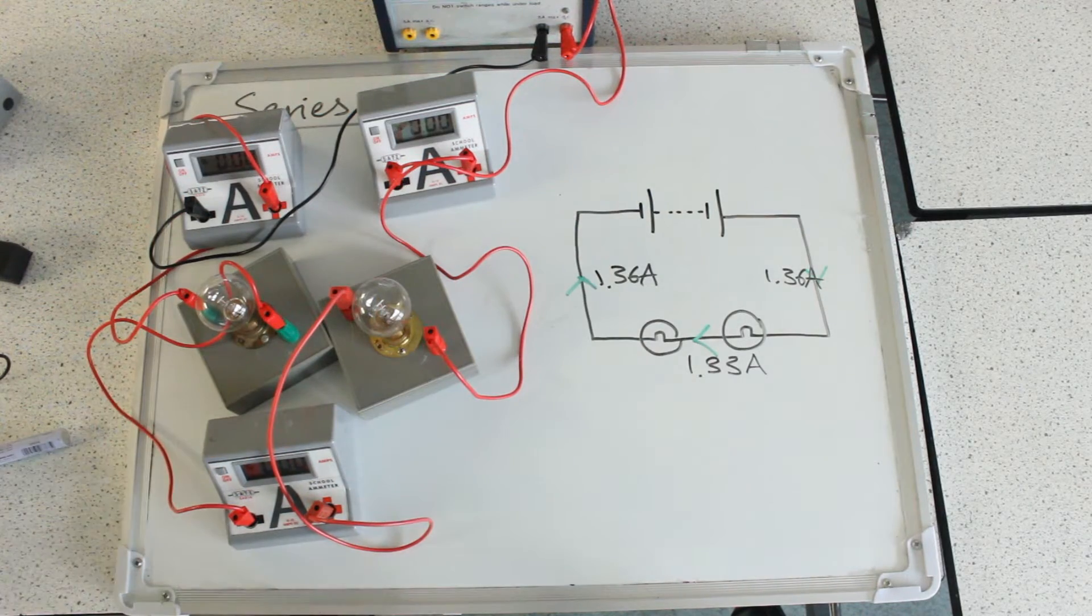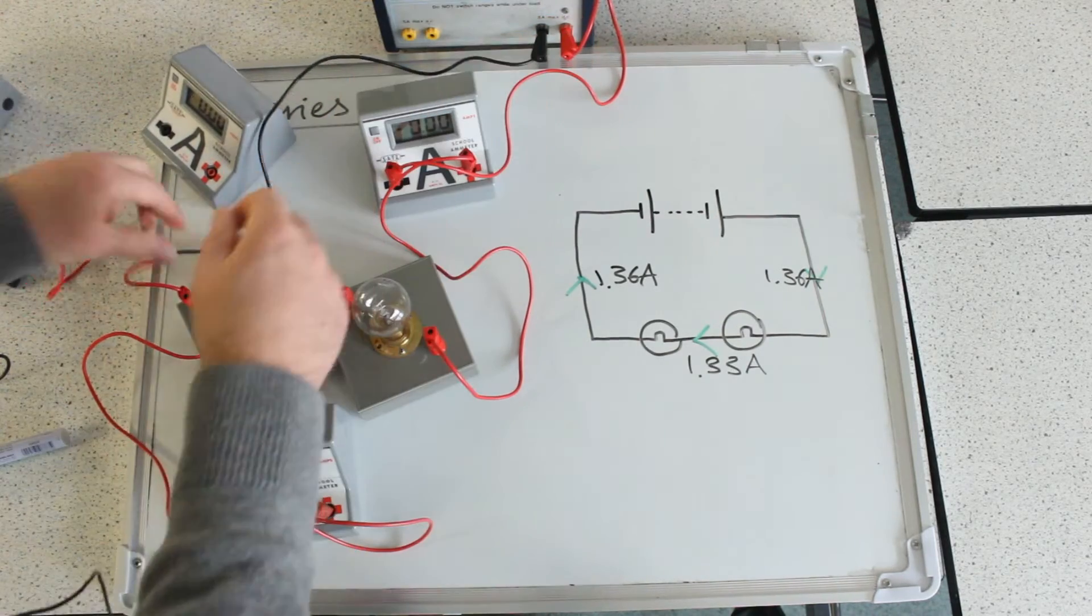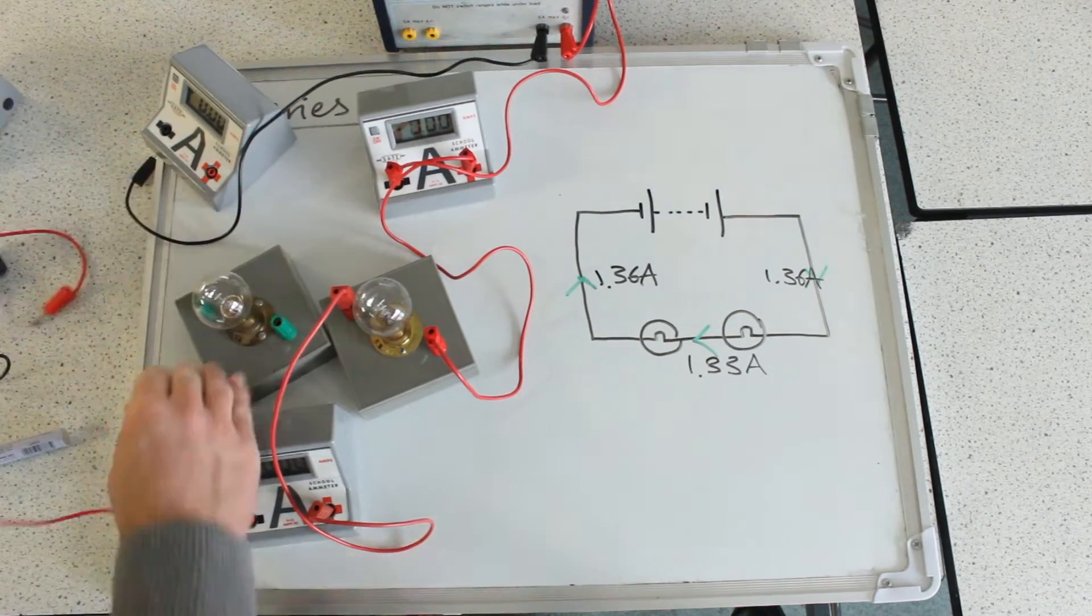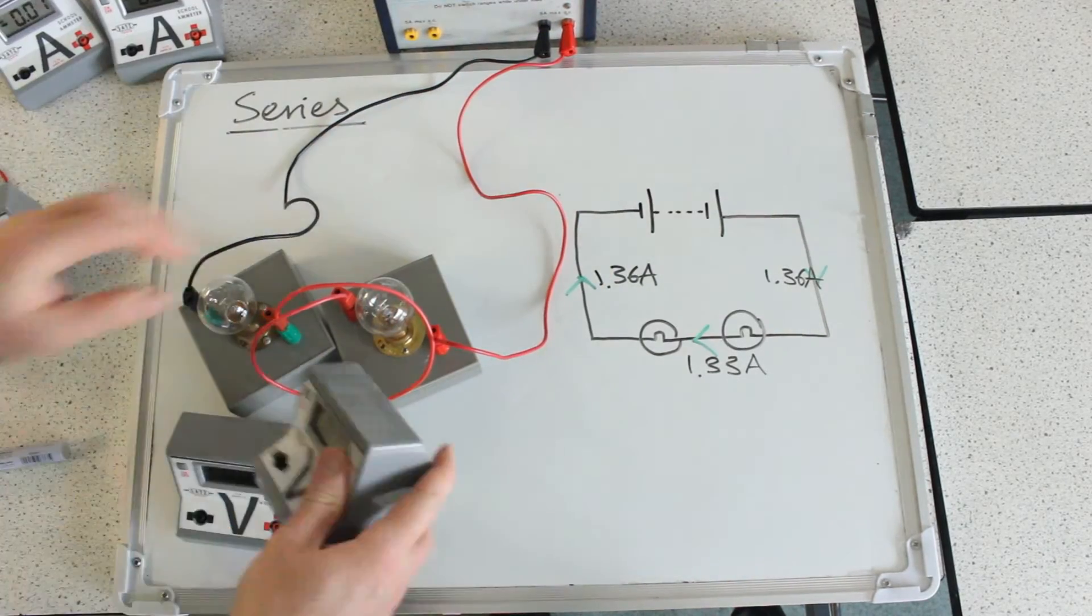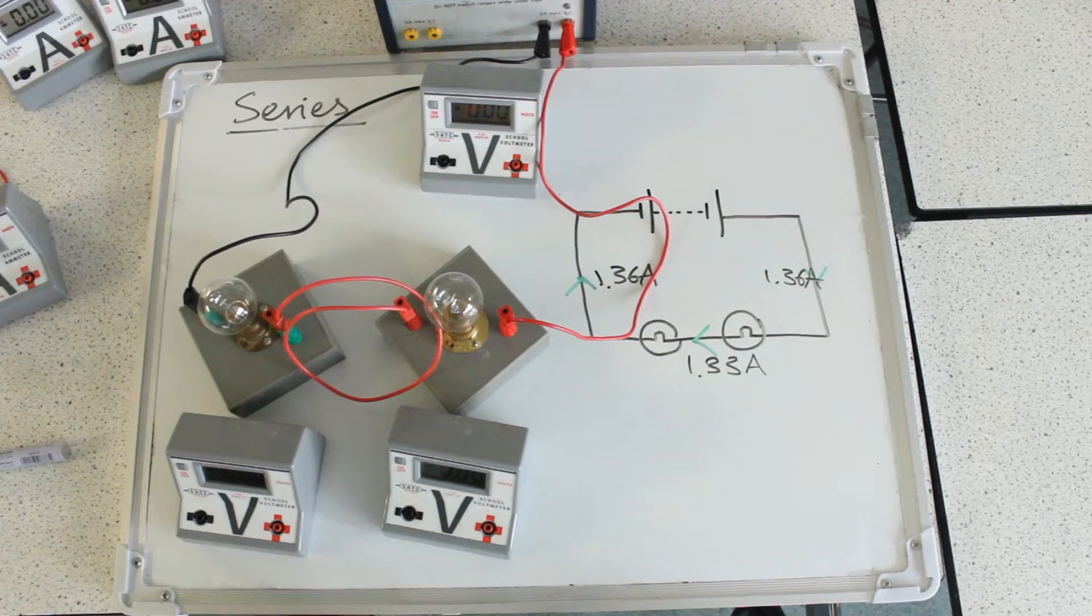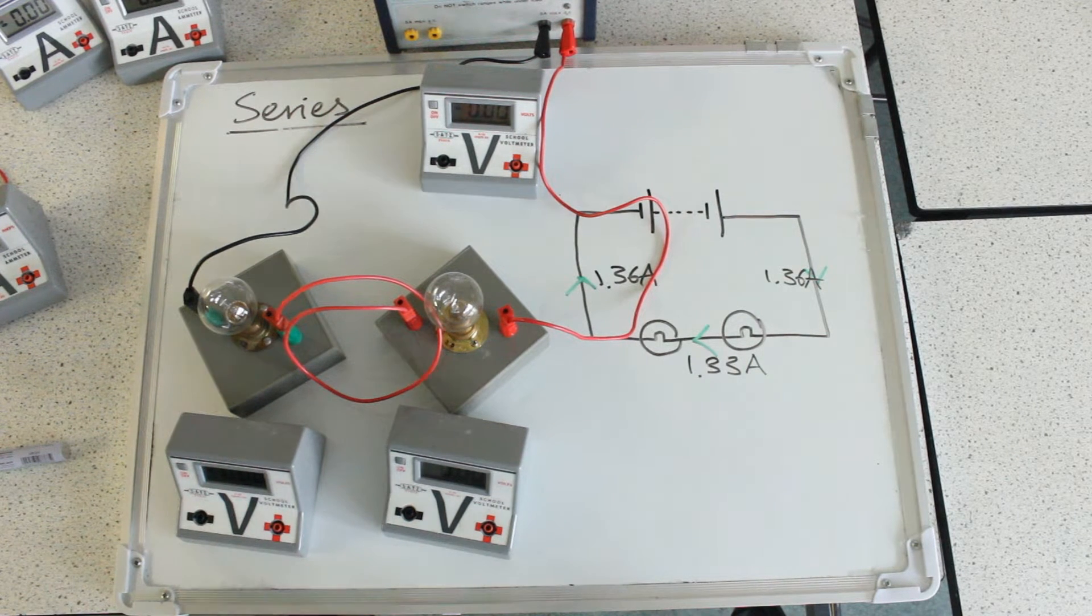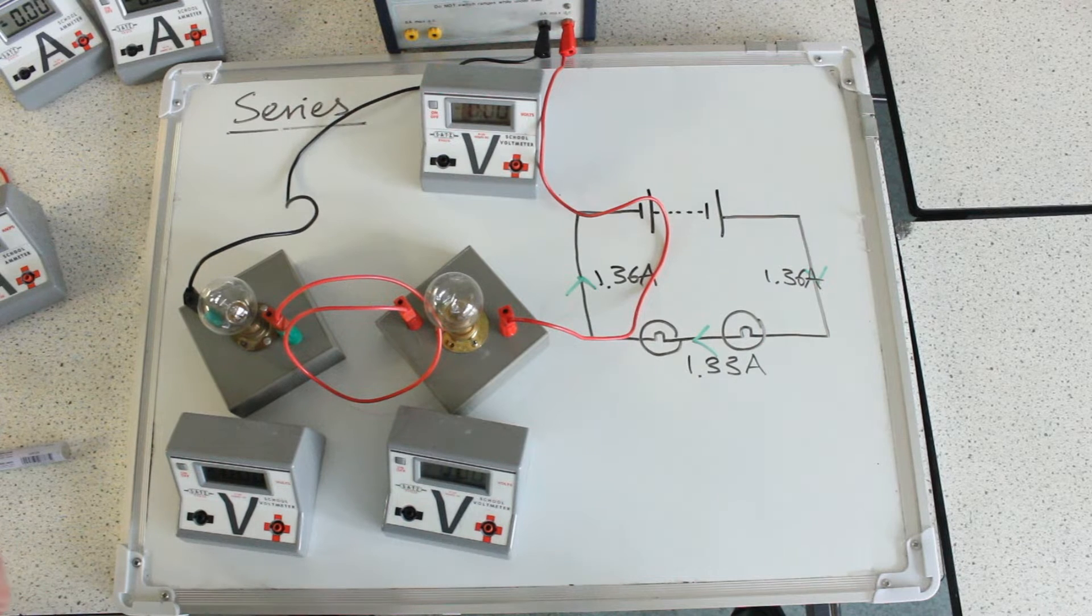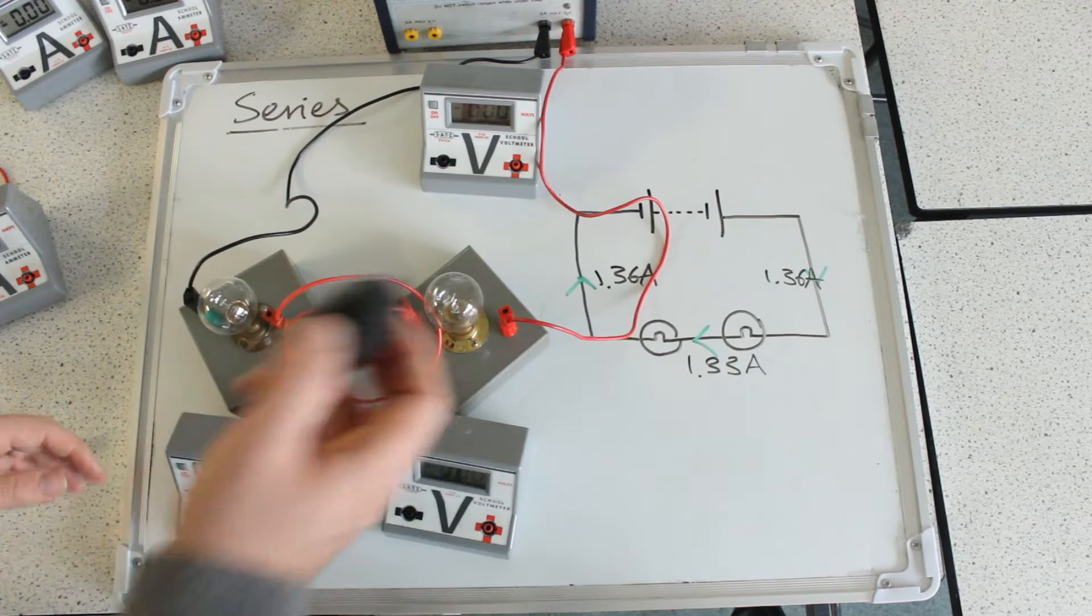So now I'm going to take my ammeters back out and measure the voltage at different points in this series loop. And so that I don't make any errors, I'm just placing the voltmeters where they go in the circuit before I plug them in, because as soon as I start using the wires it starts getting a bit confusing.